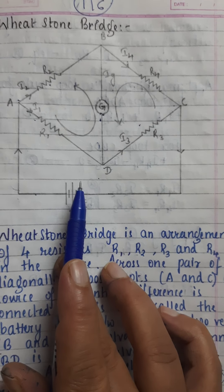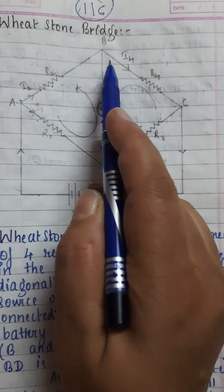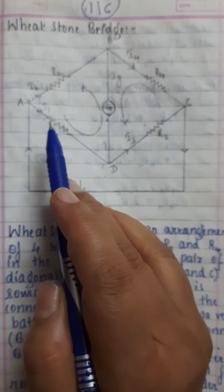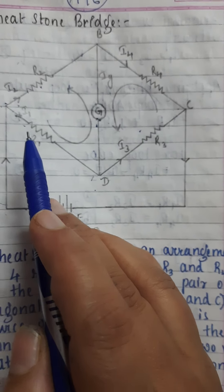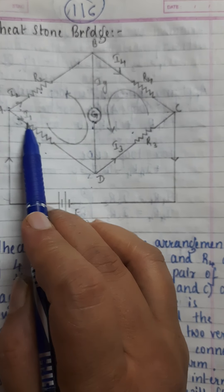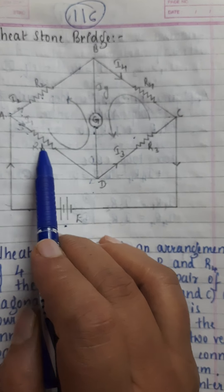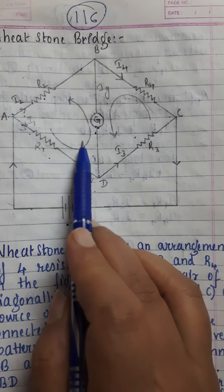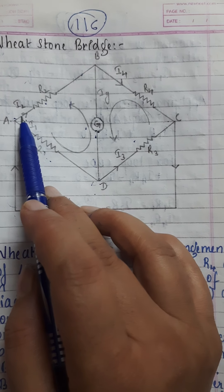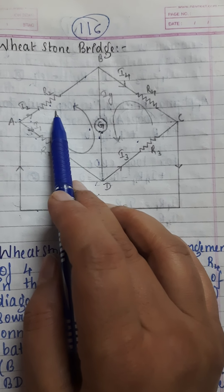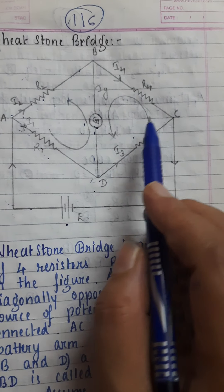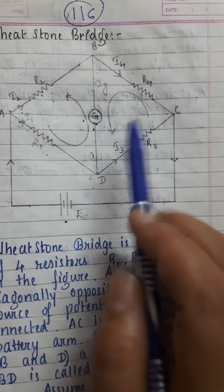Now we apply Kirchhoff's loop rule. For the first loop ADBA: going around the loop, we get −i1·R1, then current is 0 in the galvanometer branch (value = 0), then +i2·R2, giving the equation: −i1·R1 + i2·R2 = 0.